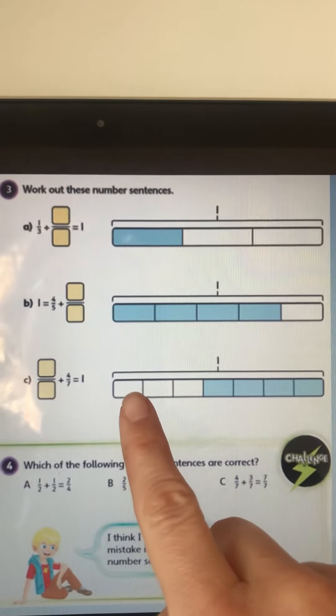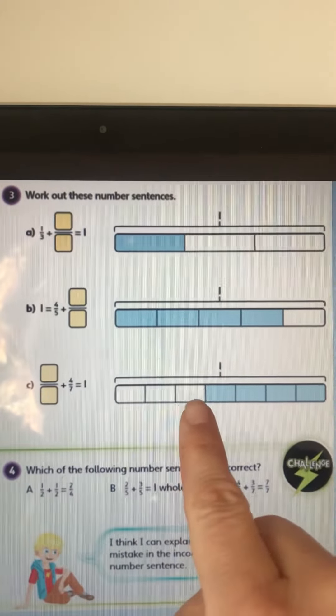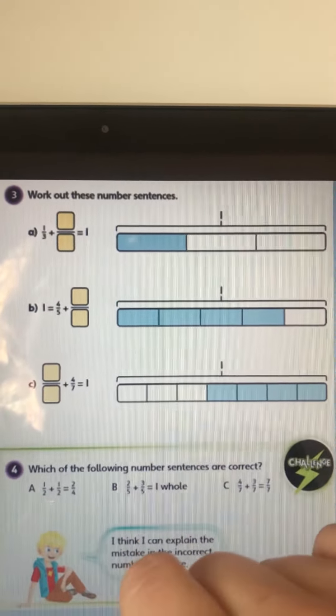And then for our last one, something plus four sevenths equals one, so here are your four sevenths, so what's left? Here, three sevenths equals one.